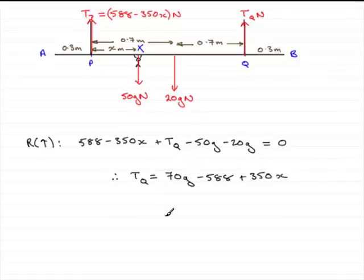Take g as 9.8 on your calculator, and you'll find that you've got 70 times 9.8 minus 588, and that gives 98. 98, then, plus 350x, and so that is the tension in newtons in the rope at q.